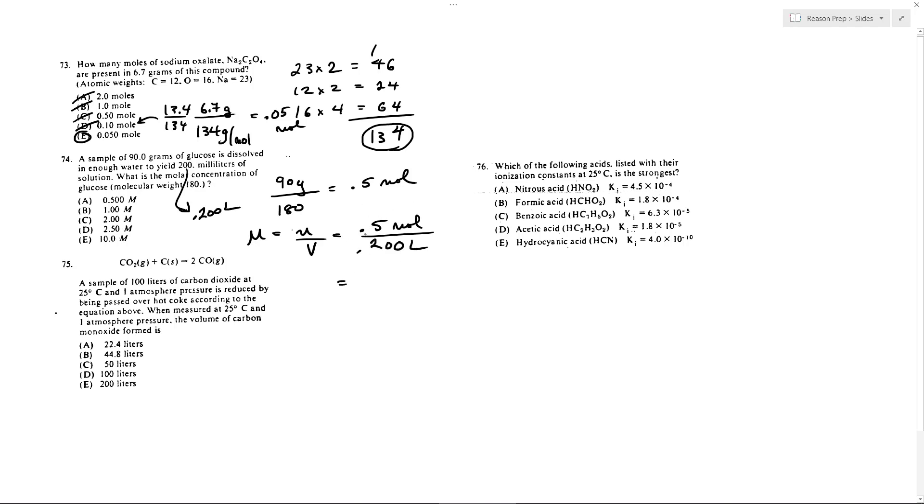Basically, just move this over one decimal point, right? This is the same thing as 5 over 2 when you move a decimal point over. And so we're going to get 5 halves, which is 2.5 molar. And so for this one, we're going to get to choice D.